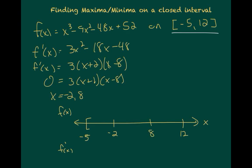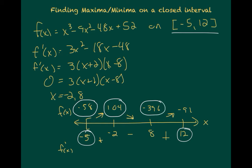When I make my sign pattern, I have to include the endpoints at -5 and positive 12. And even though they're not critical points, we have to consider them as potential candidates for maxima and minima. When I plug in -5, -2, 8, and 12, I see that I get y values of -58, 104, -396, and -92. So that means that my global maximum is actually at 104, and my global minimum is at -396. So the -58 and the -92 are the values at my endpoints, but in this case, neither one of them was a global max or global min.